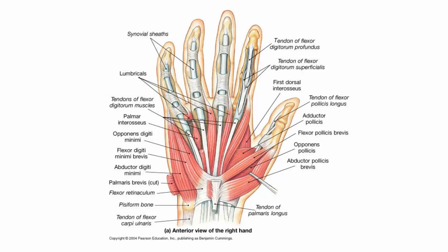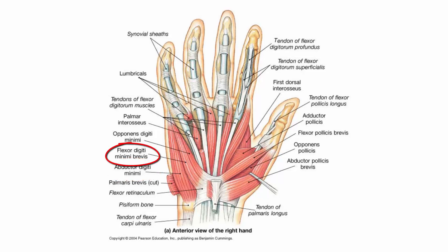On the other side, we have the hypothenar eminence. The hypothenar musculature consists of the abductor digiti minimi, the flexor digiti minimi brevis, and the opponens digiti minimi.